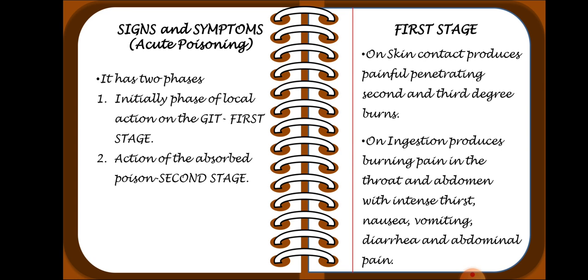In the first stage, on skin contact, phosphorus produces painful, penetrating second- and third-degree burns. On ingestion, it produces burning pain in the throat and abdomen with intense thirst, nausea, vomiting, diarrhea, and abdominal pain. These burns occur because phosphorus, when it comes into contact with air, ignites and forms P2O5. This is why it is kept under water — as soon as it is removed from water it ignites and combines with oxygen to form P2O5.